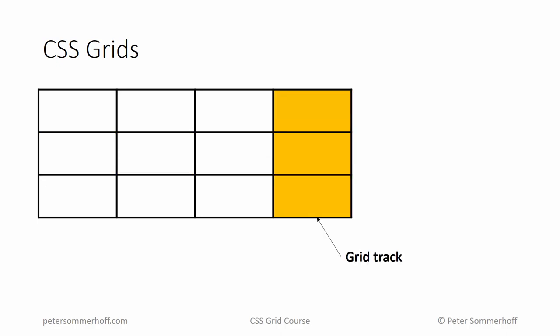Similarly, this might also be a column here if we're talking about a vertical grid track. And so then next, we also have grid cells, which are areas separated by four grid lines. They are the smallest unit you have in a grid — essentially the same thing as a grid cell in Excel, for instance.